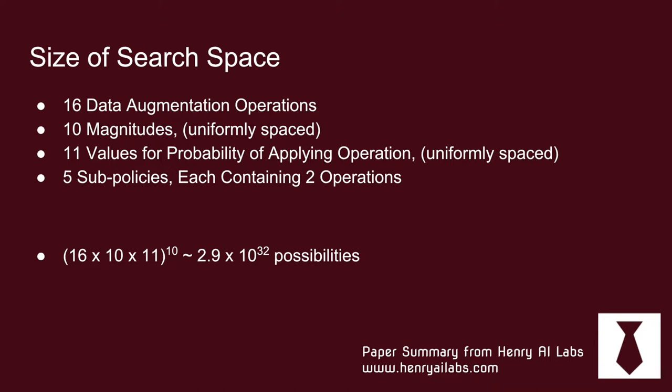The first thing with any search algorithm is to define a discrete search space. They have 16 data augmentation operations which we'll look at later on. For each operation they have 10 magnitudes. So if you're going to rotate an image, you might do it 10 degrees, 20 degrees, 30 degrees. They have 10 magnitudes in a uniformly spaced interval for each operation.